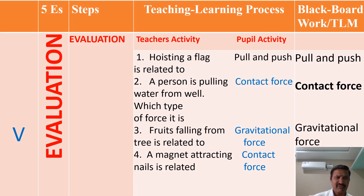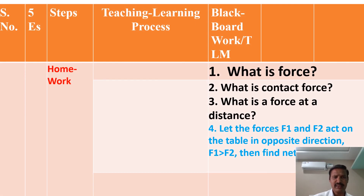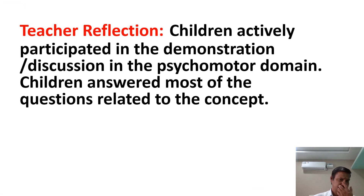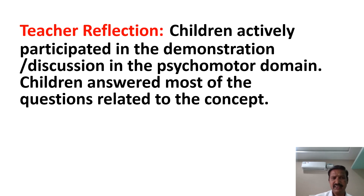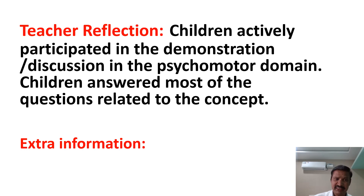Fifth one is Evaluation. In the evaluation activity, the teacher puts three or four questions and students are able to give the answers. Then you go to homework, which should also have three or four questions. Finally, teacher's reflection: children actively participated in the demonstration and in the psychomotor domain. Children answered most of the questions related to the concepts. You also have to mention extra information.